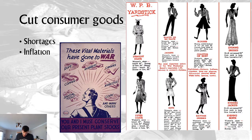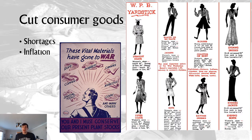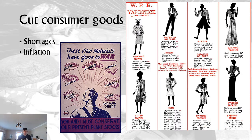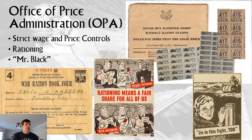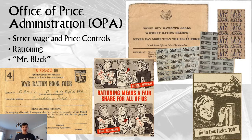Women would start wearing more pants — partly because they could make pants for both men and women and save fabric. This would be a big change in style. Silk stockings became impossible to get because silk came from China and Japan controlled that supply. So nylon stockings, which are synthetic and made from petroleum, began to become fashionable. Women would draw them on, and nylons became fashionable.